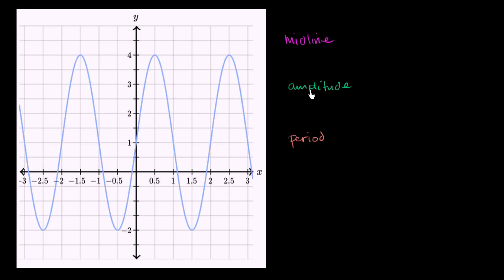Then I want you to think about the amplitude. How far does this function vary from that midline? Either how far above does it go or how far does it go below? It should be the same amount because the midline should be between the highest and the lowest points. And then, finally, think about what the period of this function is. How much do you have to have a change in x to get to the same point in the cycle of this periodic function? So I encourage you to pause the video now and think about those questions.